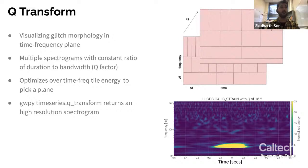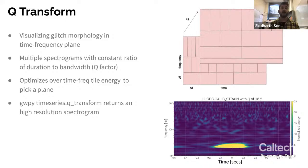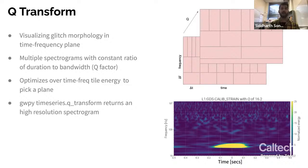Q-transform helps us visualize glitch morphology in the time-frequency plane. It starts by taking the data and projecting it onto a multi-resolution basis parametrized by time, frequency, and Q — where Q is a constant ratio of duration to bandwidth, or you can think of it as the aspect ratio. The Q-transform creates multiple spectrograms with constant Q, then optimizes over these planes and picks the one containing the loudest time-frequency tile. It returns a high-resolution spectrogram with a specific Q value, event time, and frequency.